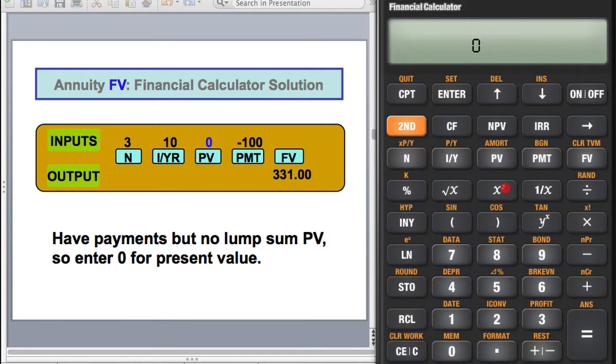You start with nothing, so that's why present value is 0. You're depositing $100 into the bank at the end of each year. That's 100, and you want to calculate the future value. To compute FV, that's $331.